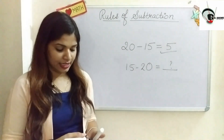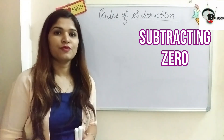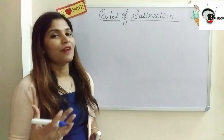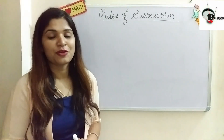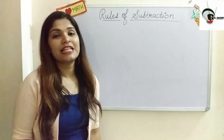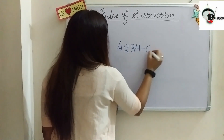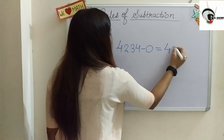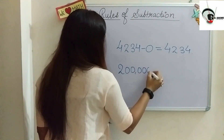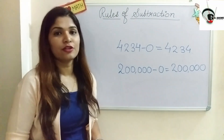The second rule is subtracting zero. Suppose I have 5 chocolates and I don't share any with anyone — I am still left with 5 chocolates. So there is no change in the number when we subtract 0 from it, whether it is a small or large number. If I subtract 0 from 2 lakh, I still get 2 lakh.